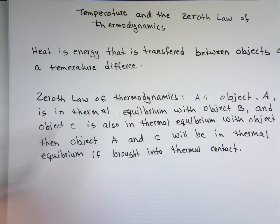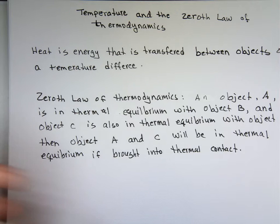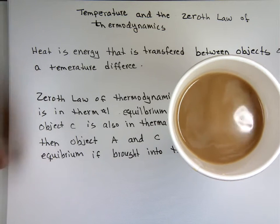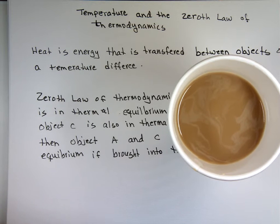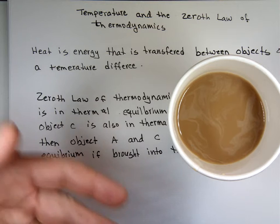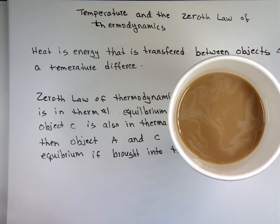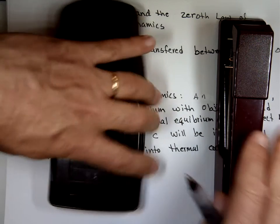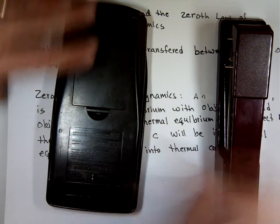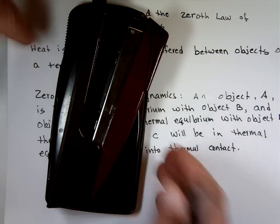Heat is energy that's transferred between objects of a temperature difference. When I made my coffee this morning, I had hot coffee added to cold cream — there's a difference in temperature, so heat transfers from the hot coffee to the cream until they reach the same temperature. If you take two objects of different temperatures, like a calculator at 100 degrees and a stapler at 40 degrees, and put them together, heat will transfer from the hotter one to the cooler one until they reach the same temperature.